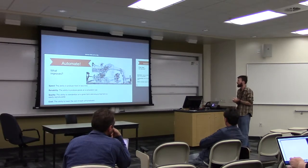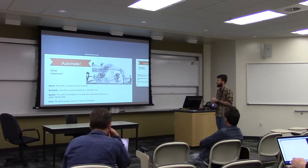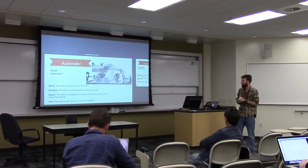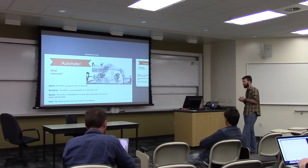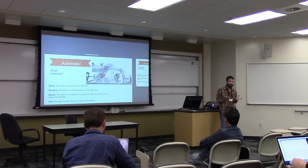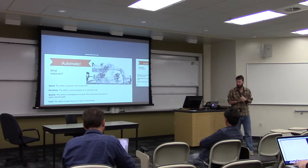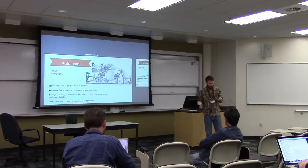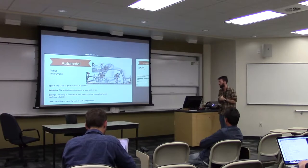And automation does improve a lot of things. When the threshing machine came out, that was about 1890, it revolutionized agriculture. When we automate things, we can produce more in less time. Reliability tends to increase as the result of automation. We can all of a sudden guarantee, more or less, the production of goods at a consistent rate.